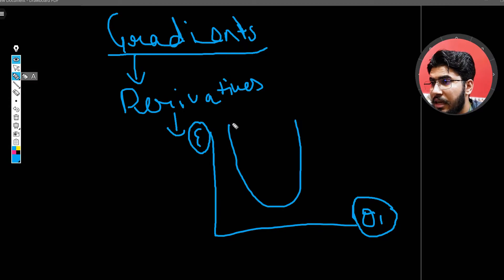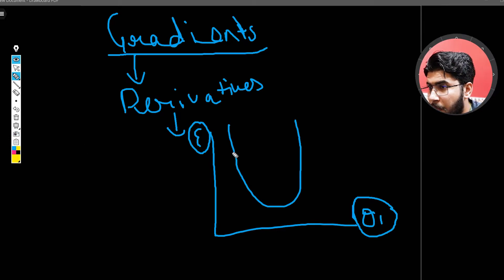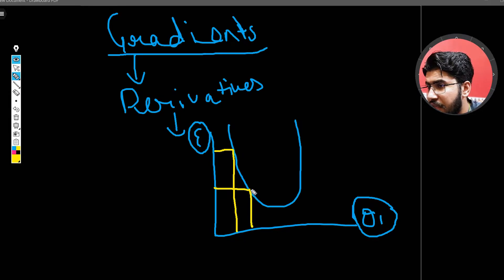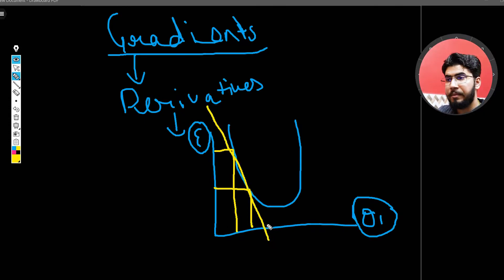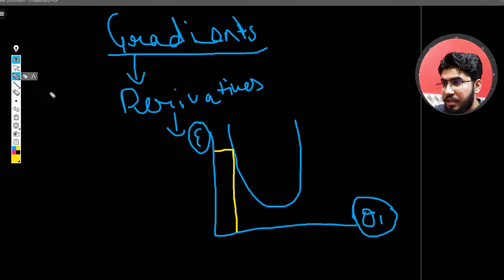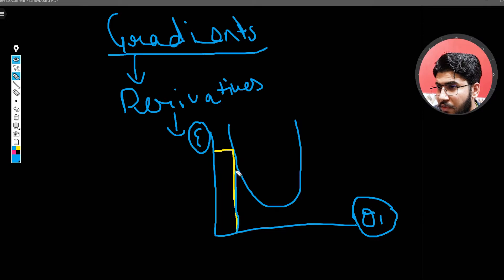Let's take two points on the error vs theta 1 graph. For this theta 1, our error is at one value, and for another theta 1, our error is at a different value. We can see how theta 1 is changing the value of our error. Because we have two points, we can draw a line using them. If you decrease the distance between those two points — say theta 1 and theta 2 — and take a point very very close to the previous one,